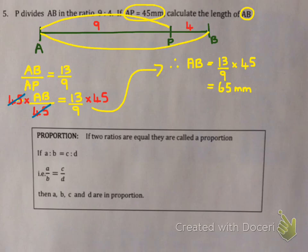Now you can always check if you're right. Because first of all AB must be longer than AP. So if you get a number that's smaller, obviously you're wrong. And the second way to check that you're right is to substitute in. Take AB's length, 65, and divide by AP's length, which is 45. And your calculator should simplify that to 13 over 9. If it doesn't, then you know it's wrong.